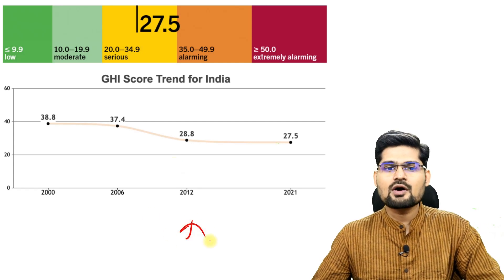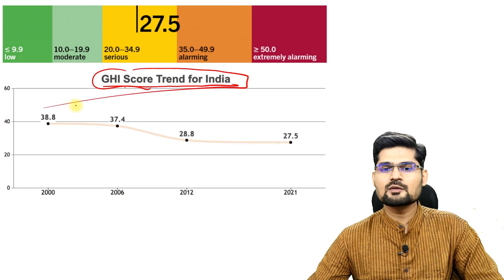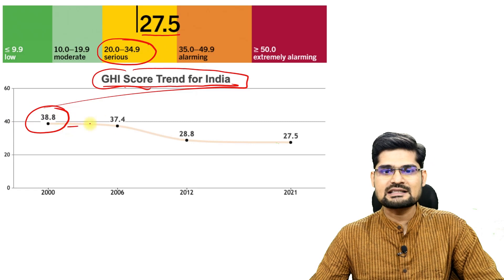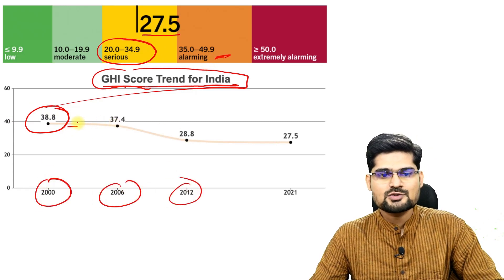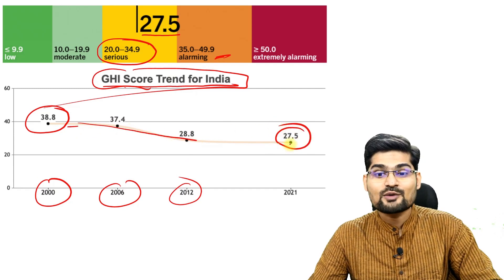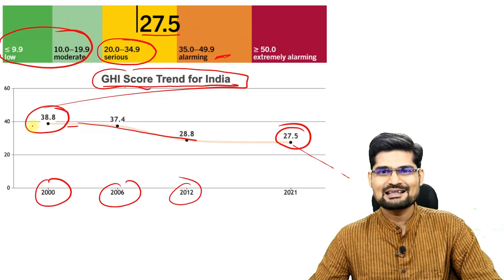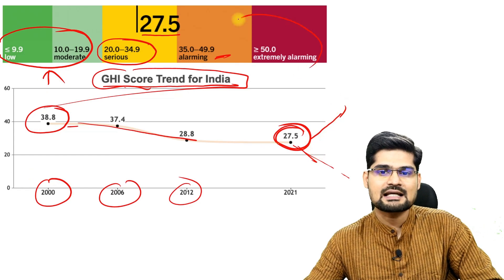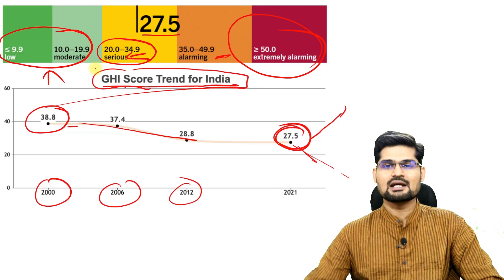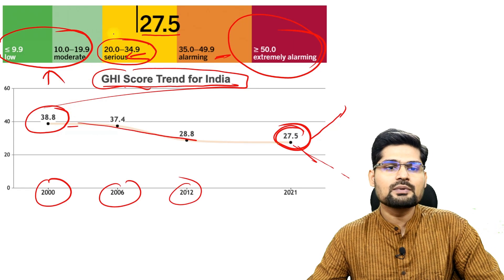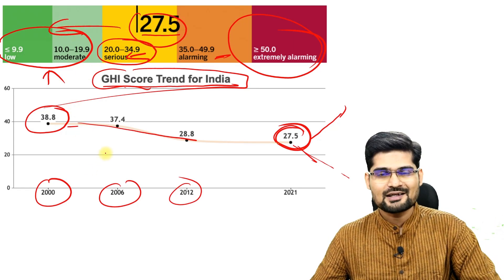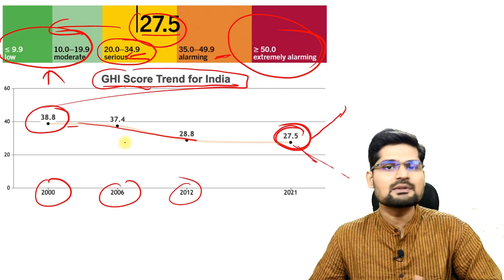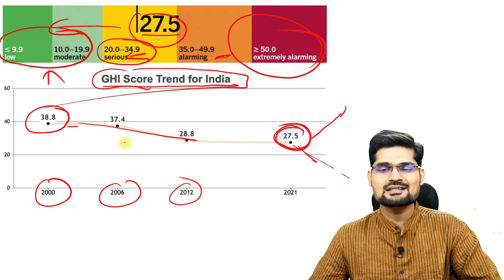Looking at the GHI score trend for India: at 27.5 we are in the serious zone. We were in alarming stages, close to serious stages, around 2000, 2006, and 2012. Gradually we are lowering on this number, but we need to lower further to enter the green zone. Falling in these computations means doing well in terms of food and nutrition; if your rank is going up, that is alarming. We are right now in serious condition, and this is where sustainable development goals of zero hunger and poverty become crucial, alongside ongoing international talks.